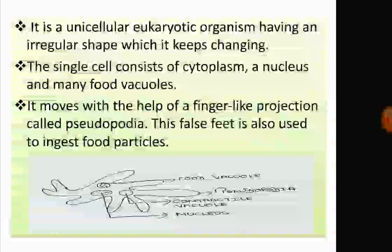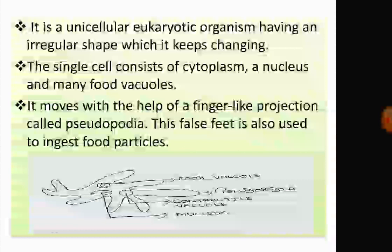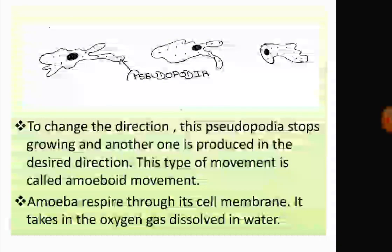The single cell of Amoeba consists of cytoplasm containing a nucleus and many food vacuoles. It has false feet called pseudopodia, and it moves and ingests food with the help of pseudopodia. While moving, it produces small finger-like projections, and many pseudopodia project out from its body.